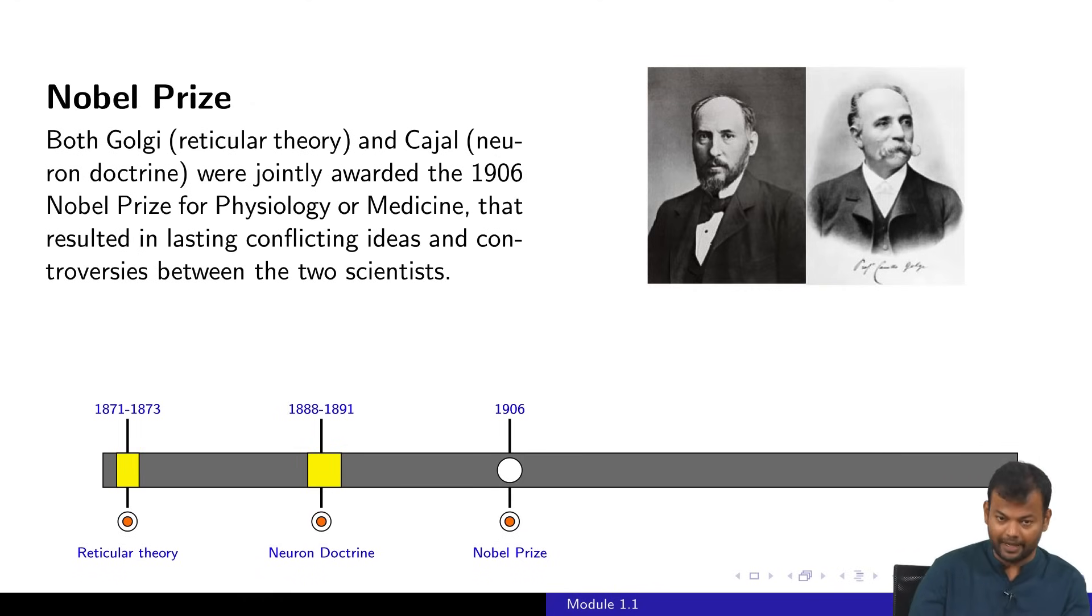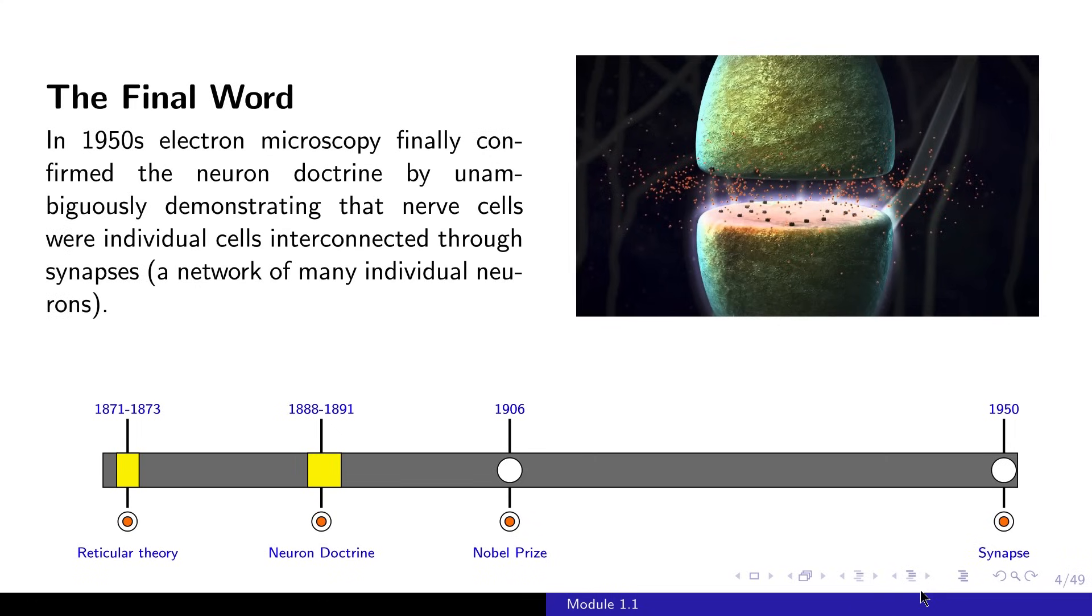This debate was surprisingly settled way later in 1950, and not by progress in biology as such, but by progress in a different field. This was with the advent of electron microscopy. It was now able to see this at a much better scale. By looking at this under a microscope, it was found that actually there is a gap between these neurons, and hence it is not one single cell but actually a collection or network of cells with a clear gap between them or connections which are now known as synapses.